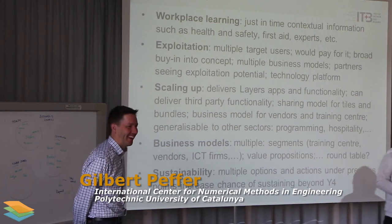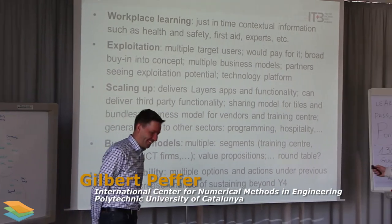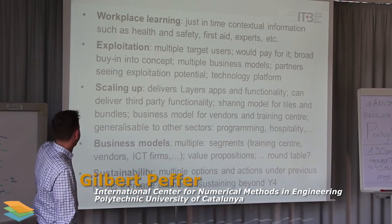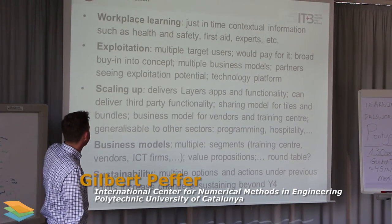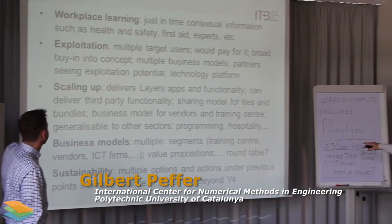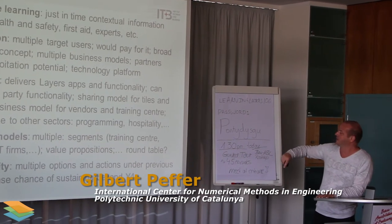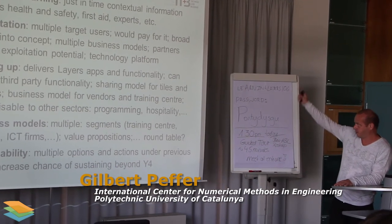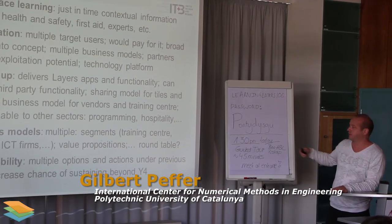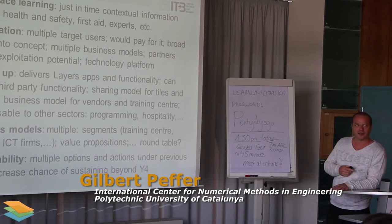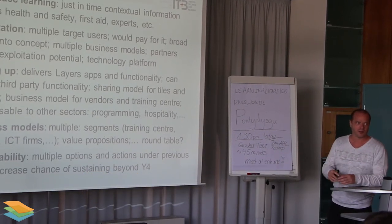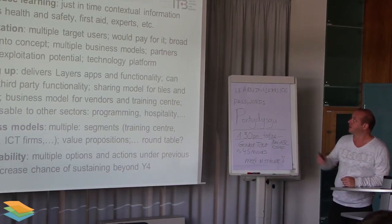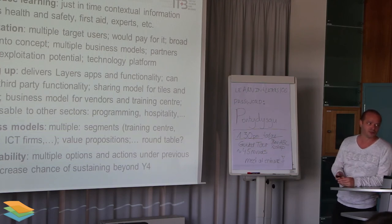Multiple business models: we have different segments and different combinations of segments, such as training centers, vendors, ICT firms, and so on — with different value propositions. Please think about that in the round table. Sustainability: there are multiple options and actions that give us a chance that this will be sustainable. At the last point: when you program or develop, please think about an API. Think about developing an API for your stuff, so that we have it much easier to dig into the learning toolbox. Thank you very much.